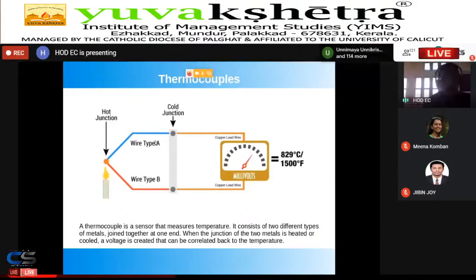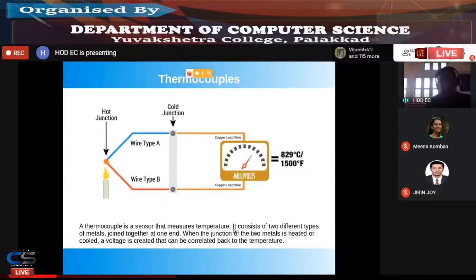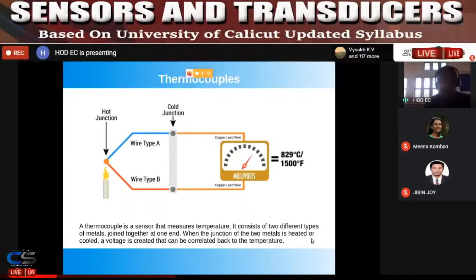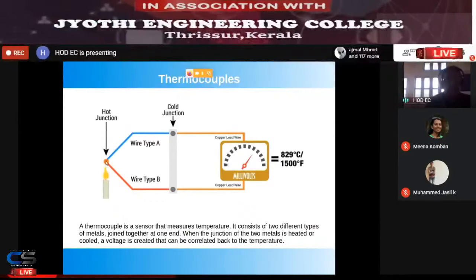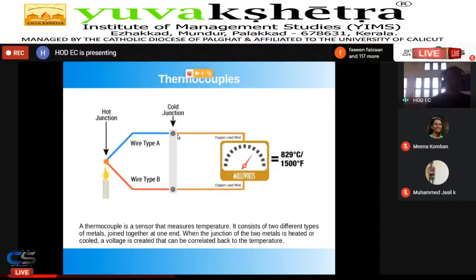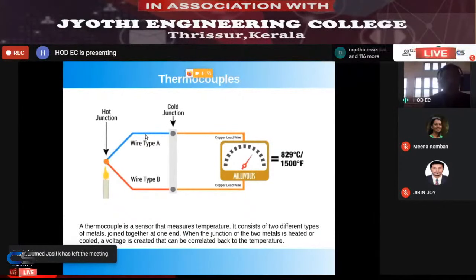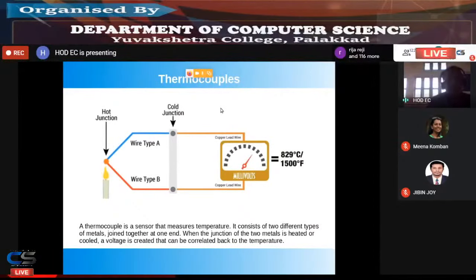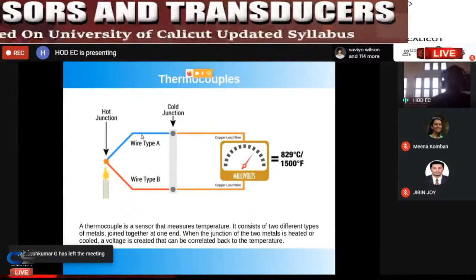A thermocouple is a sensor that measures temperature. It consists of two different types of metal joined at one end. When the junction is heated or cooled, a voltage is created that can be correlated back to the temperature. There is a hot junction and a cold junction; if there is a temperature difference between them, a potential is created. This sensor directly converts heat into voltage with no additional circuitry needed.